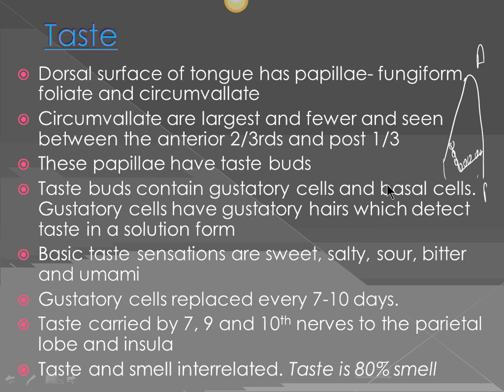We also have cells next to the gustatory cells called basal cells. These are supporting cells that help in regeneration, because gustatory hairs can be destroyed when you eat or drink something really hot. If your tongue is burned severely or your salivary glands are damaged, taste can be affected. Even if salivary glands are damaged, buccal glands will still produce enough saliva.